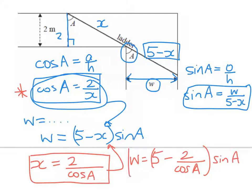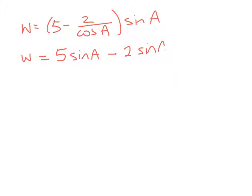Right, so we've actually done the really hard setup part of the problem is now over. And we still need to use our brains a little bit, but it's not so bad from here on. So you might want to pause the video now and just see if you can get to the end of the problem without me. So we've got w equals 5 minus 2 over cos a sine a. I'm going to expand that. w is equal to 5 sine a minus 2 sine a over cos a. So the width of the corridor is equal to 5 sine a minus 2 tan a.